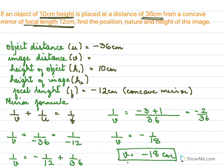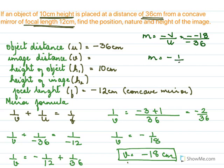Now using v = −18 and u = −36, we find magnification: m = −v/u = −(−18)/(−36) = −1/2. The negative sign indicates the image is inverted and therefore real. The magnitude 1/2 (less than 1) means the image is diminished. Nature: real, inverted, diminished.